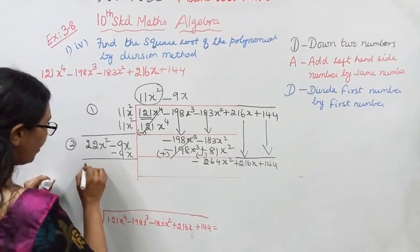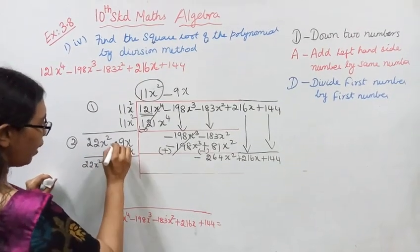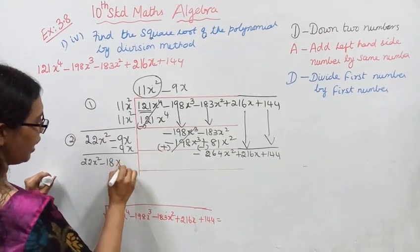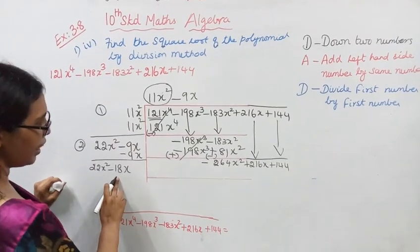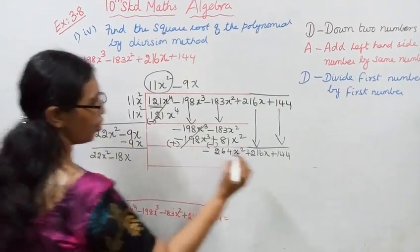Apply the same procedure. First, down to numbers. Add left hand side. Left hand side number by same number: 22x² plus -9x minus -9x is -18x. Divide first number by first number.